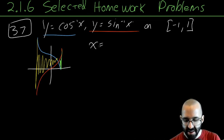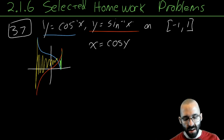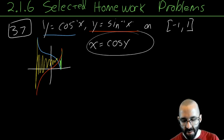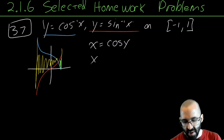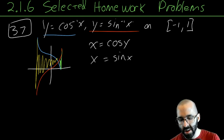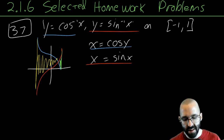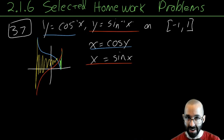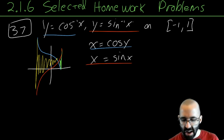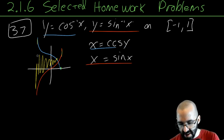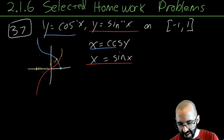Let's do it the other way and write x equals cosine of y and x equals sine of y. As long as x is between negative one and one, these are equivalent on our specific domain. Now these integrals we can do — integral of cosine is fine, integral of sine is fine — so we'll integrate with respect to y instead.